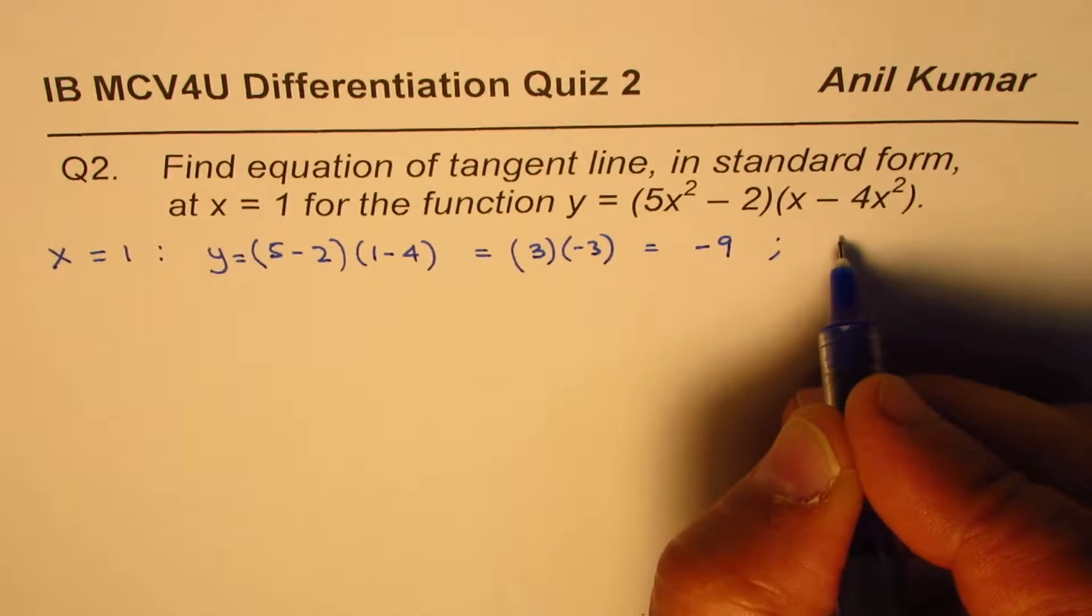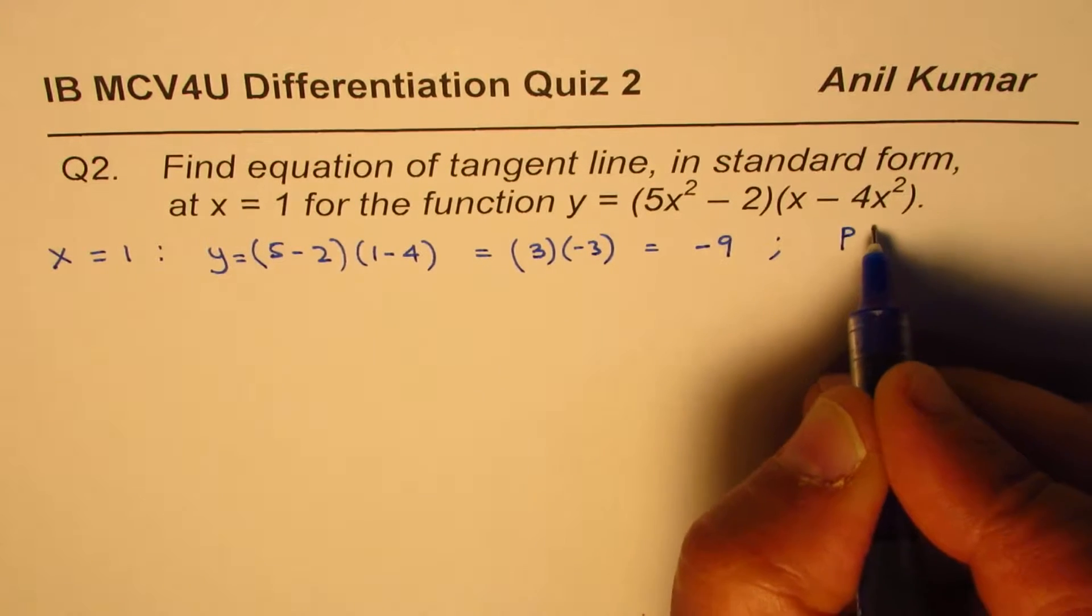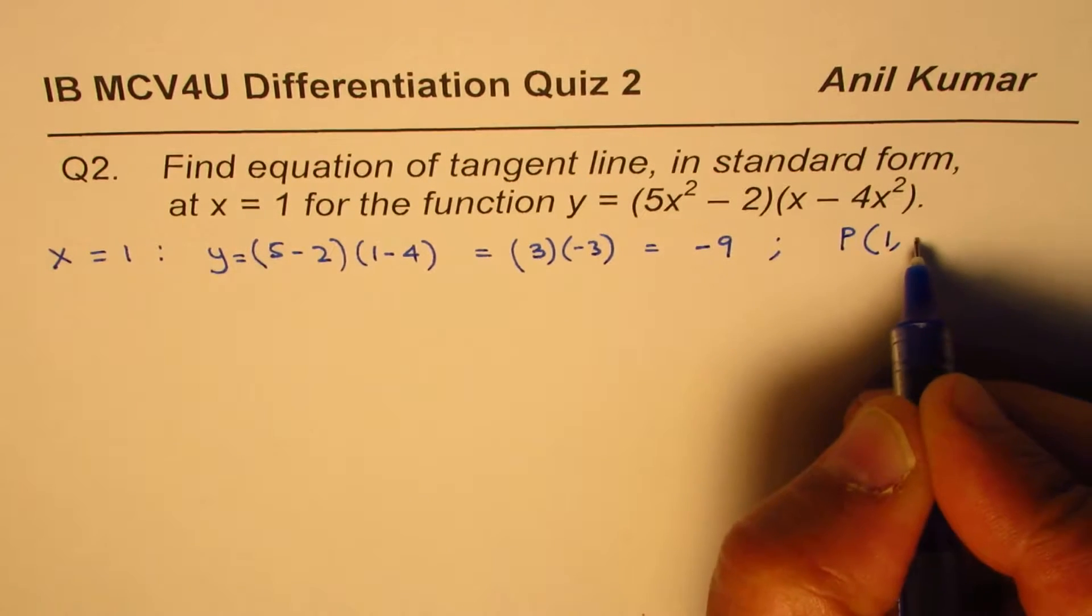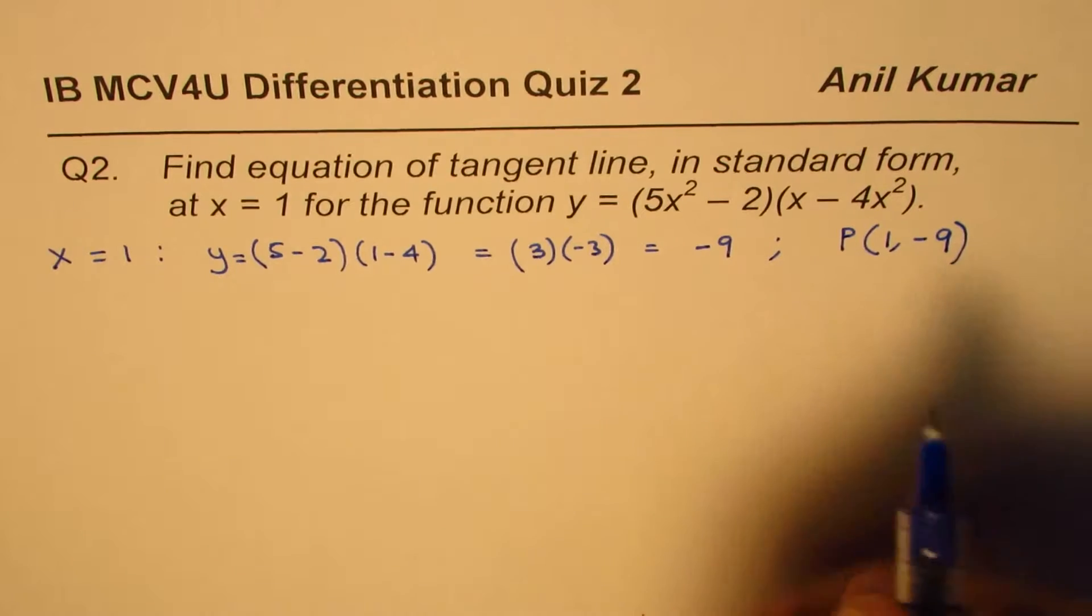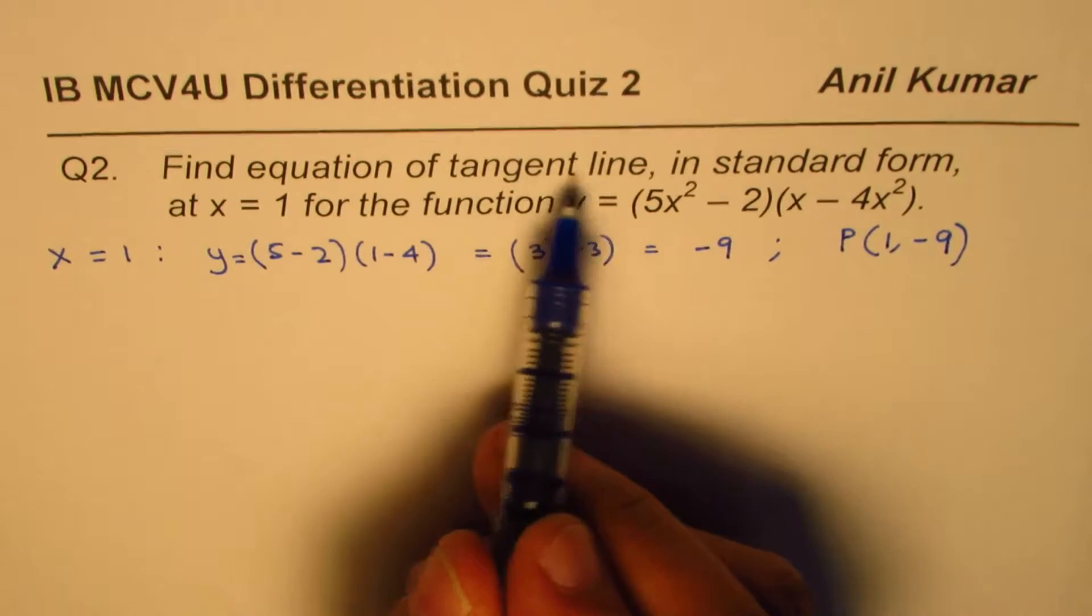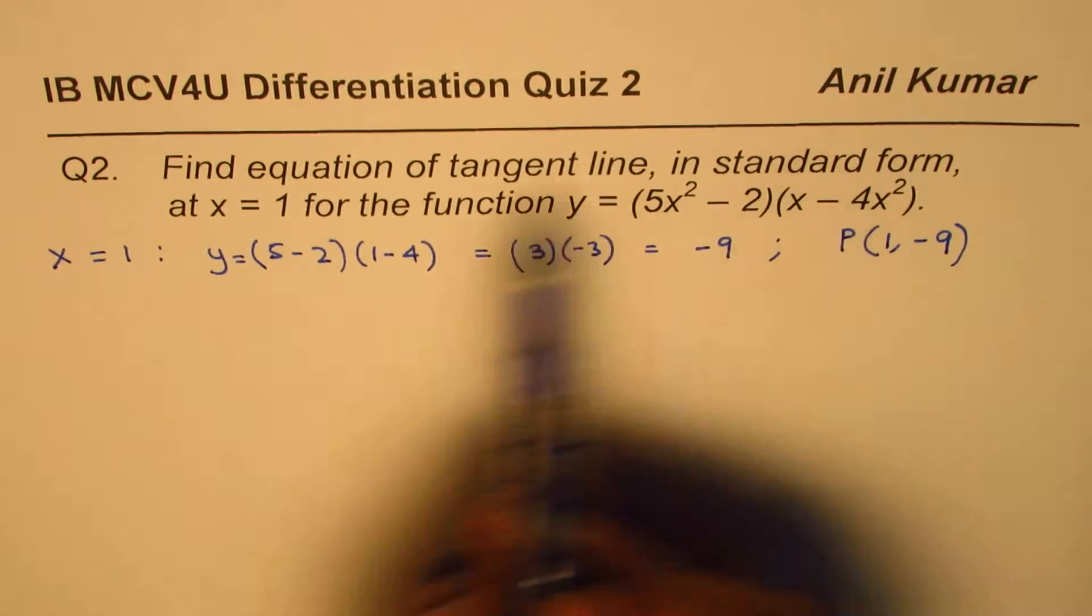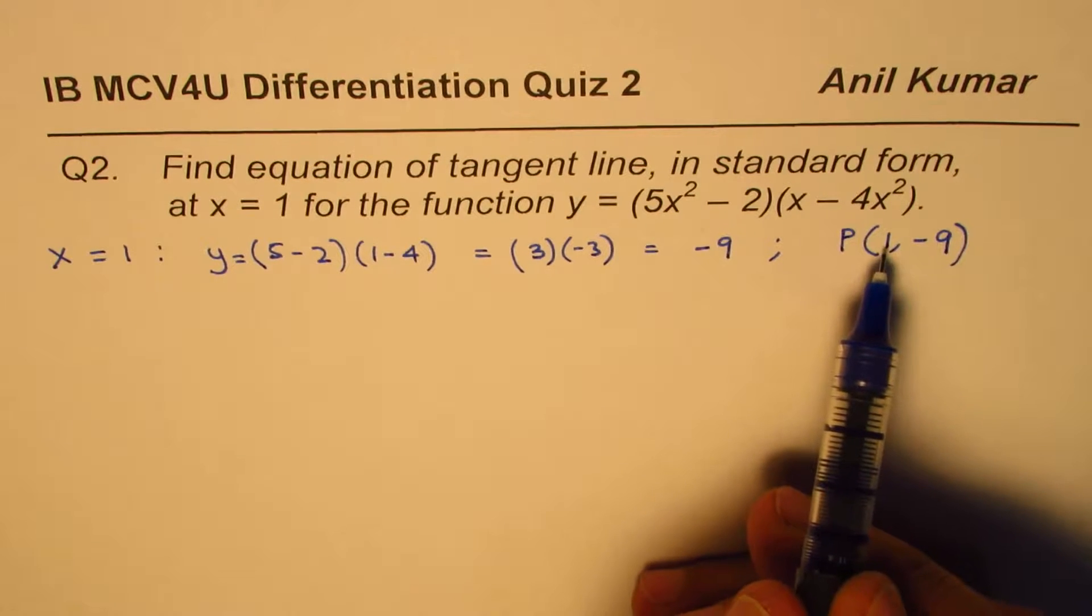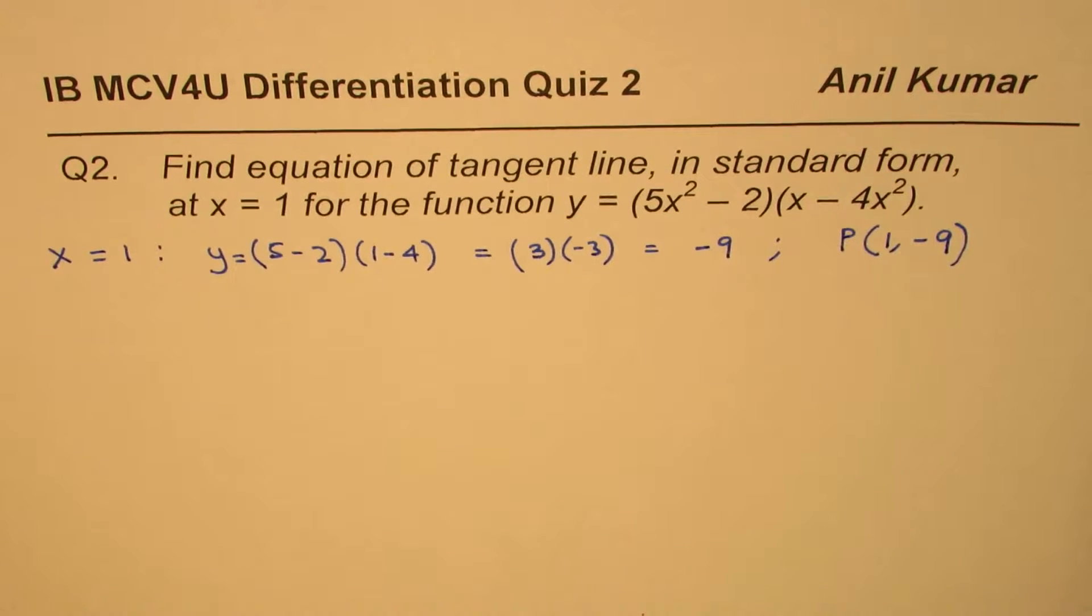And therefore, we are considering the point, let's say P, where x value is 1 and the y value is minus 9. So basically, we'll find equation of tangent line in standard form at this point, where x is 1, y is minus 9.